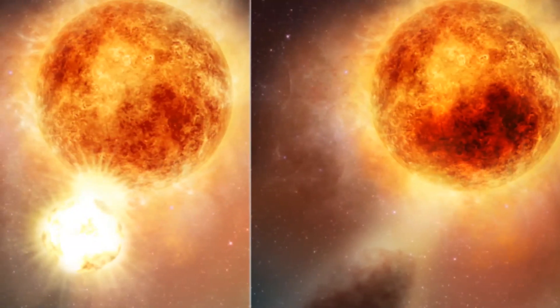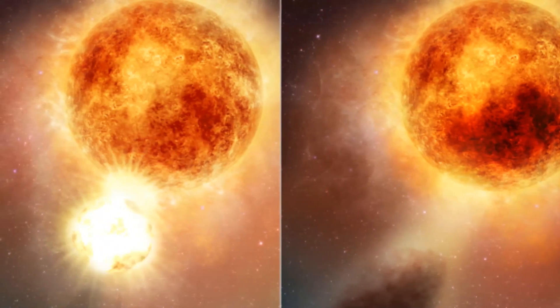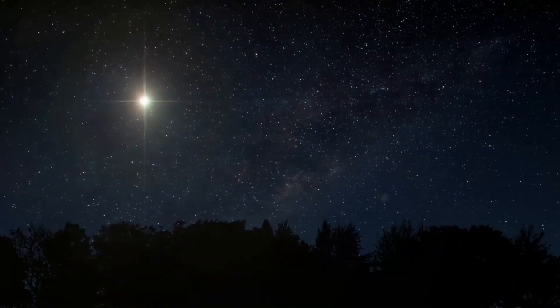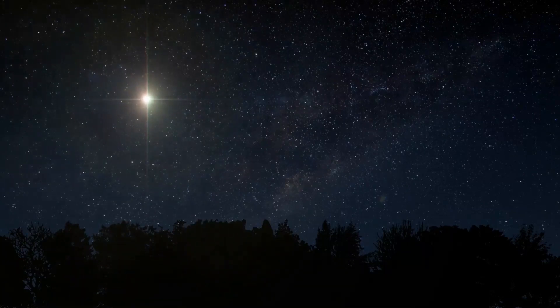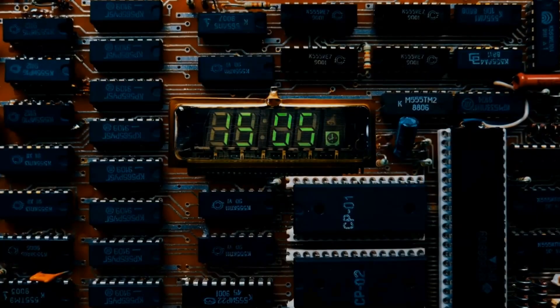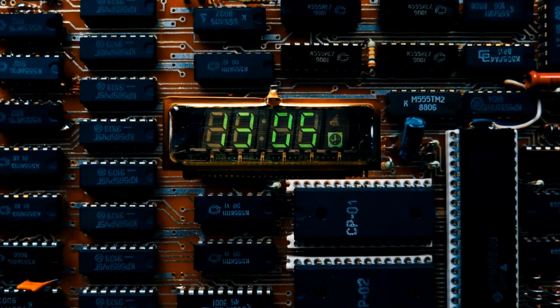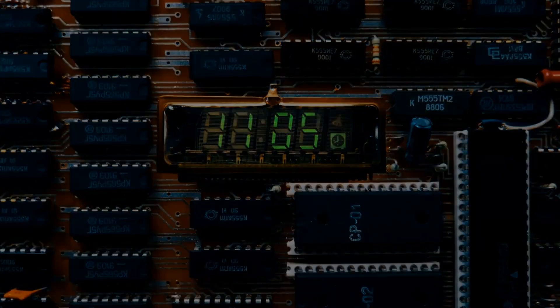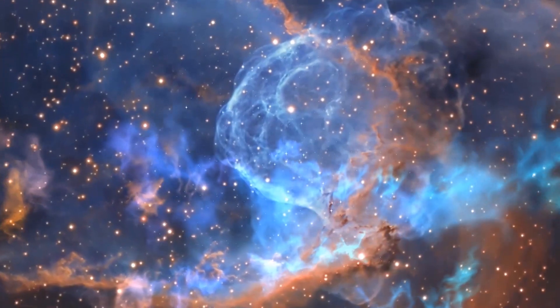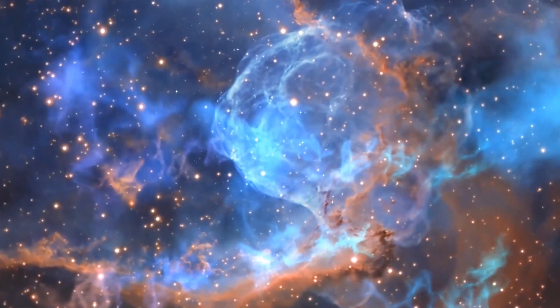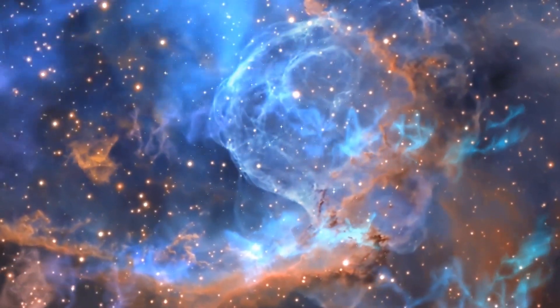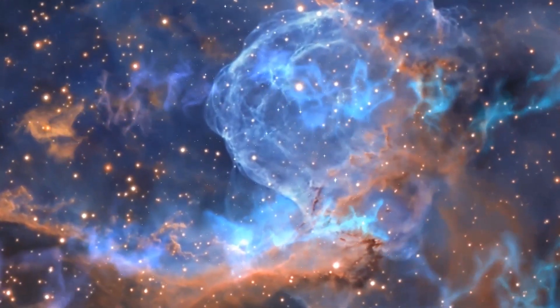At about 950 times bigger than our sun, Betelgeuse is one of the biggest stars in our universe. But that comes with a price. Just like us, stars have a life expectancy, and Betelgeuse is no different. It's a ticking time bomb that's ready to go, but we're not sure when. So what if today was the day that Betelgeuse went out with a bang? How would the Earth be affected? And will our universe ever be the same?